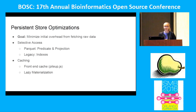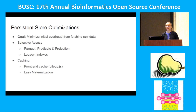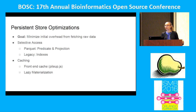For persistent storage optimizations, we use Parquet and push down predicates to disk. This means we can select very fine regions of the genome — say, just chromosome 1, the first 100 base pairs — without scanning all the data across the cluster. We can just go to the node where that data is located and grab that specific section.